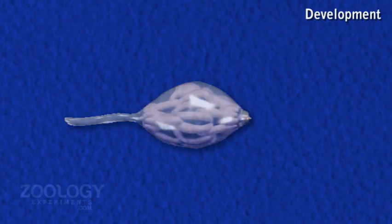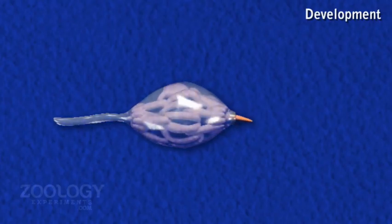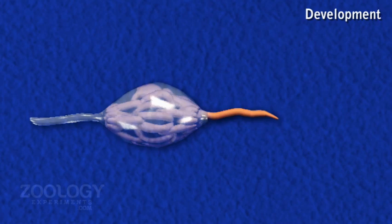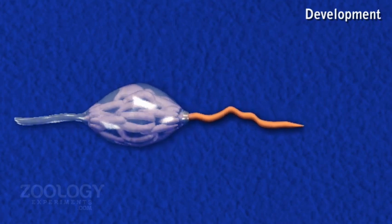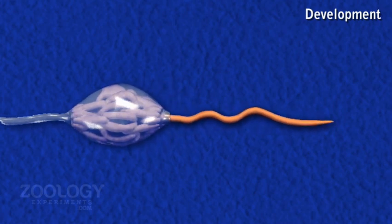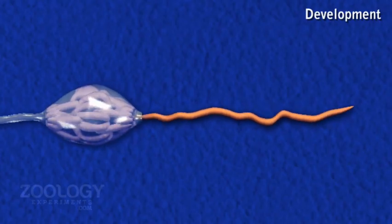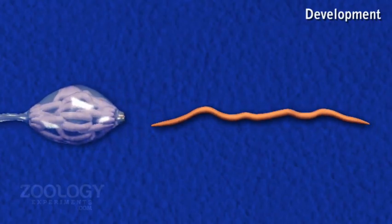The young worm, when fully grown, crawls out of the cocoon in about two or three weeks. The newly hatched young worm receives no parental care and resembles the adult except for its size and the absence of the clitellum.